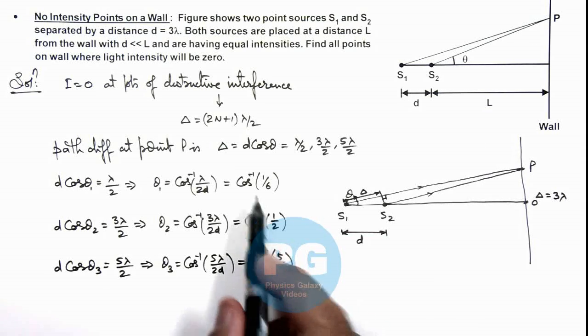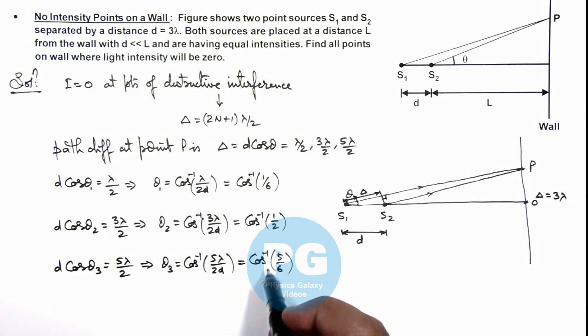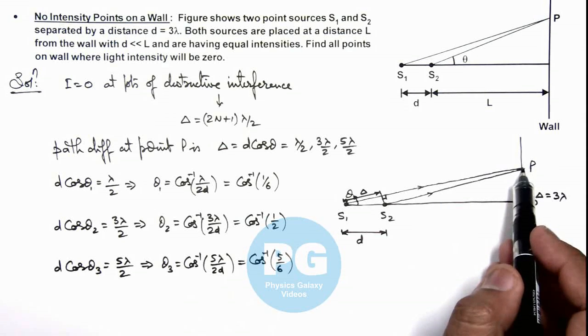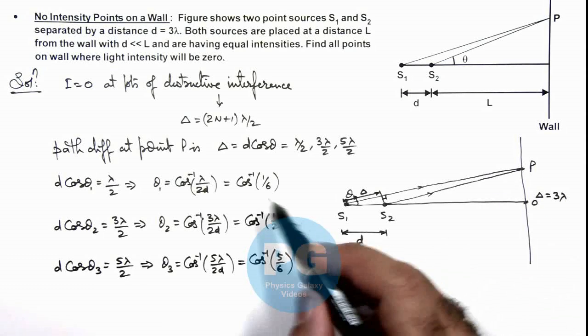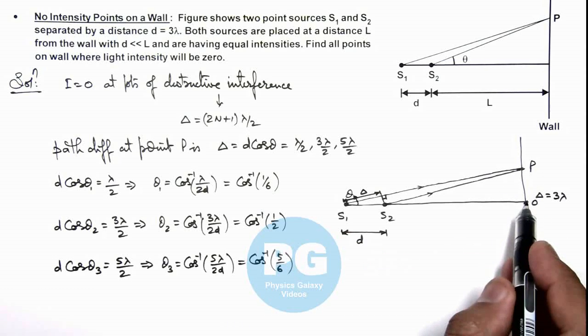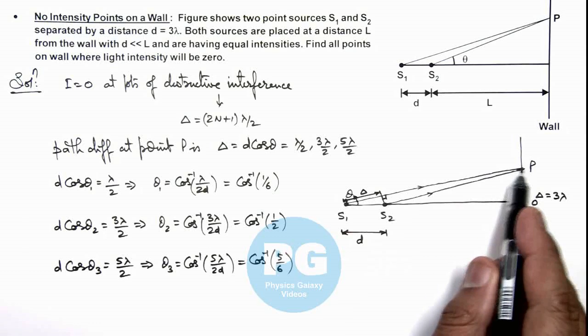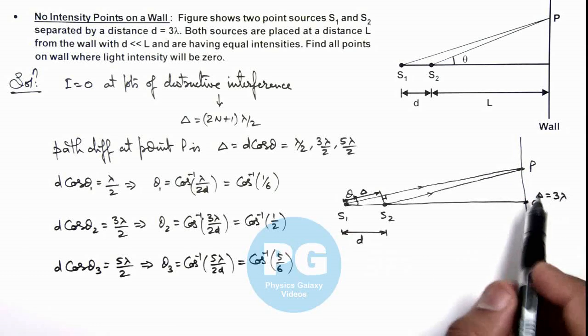So these are the 3 angles at which if we consider a particular point P from the center of screen at these angular distances from center of screen, there will be zero intensity.